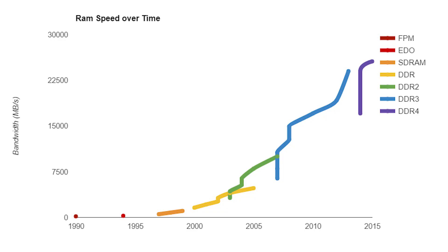As you can see in this graph stretching back to 1990, we've seen the development of seven different types of desktop RAM, and over time the speed has increased significantly with each new type. Let's take a look at some of these RAM sticks so that we can talk about the fun stuff — numbers.